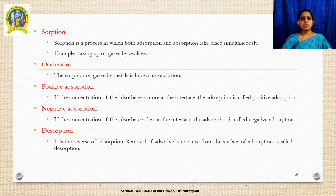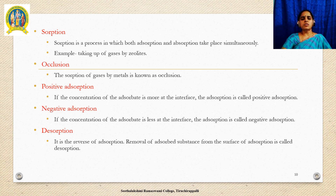Sorption is the process in which both absorption and adsorption take place simultaneously. An example of sorption is the uptake of gases by zeolite. Occlusion: the sorption of gases by metals is known as occlusion. Positive adsorption: if the concentration of the adsorbate is more at the interface, the adsorption is called positive adsorption. Negative adsorption: if the concentration of the adsorbate is less at the interface, the adsorption is called negative adsorption. Desorption is the reverse of adsorption.